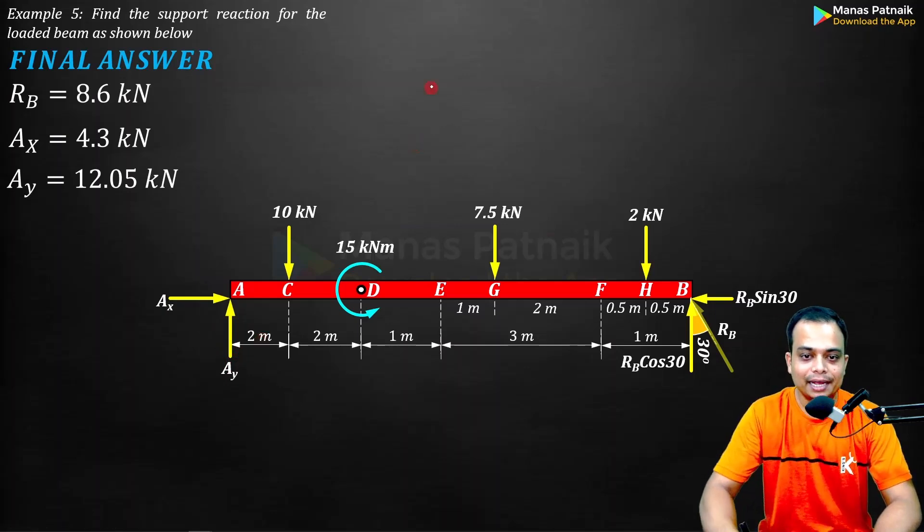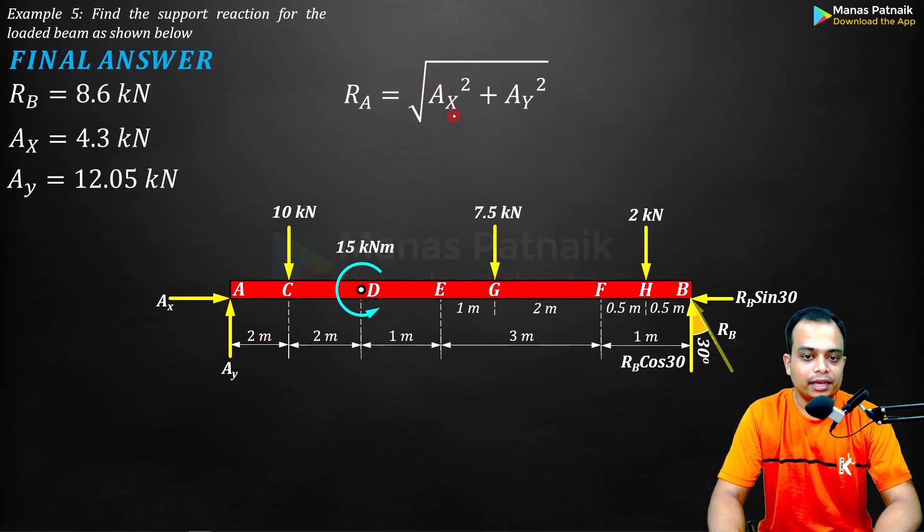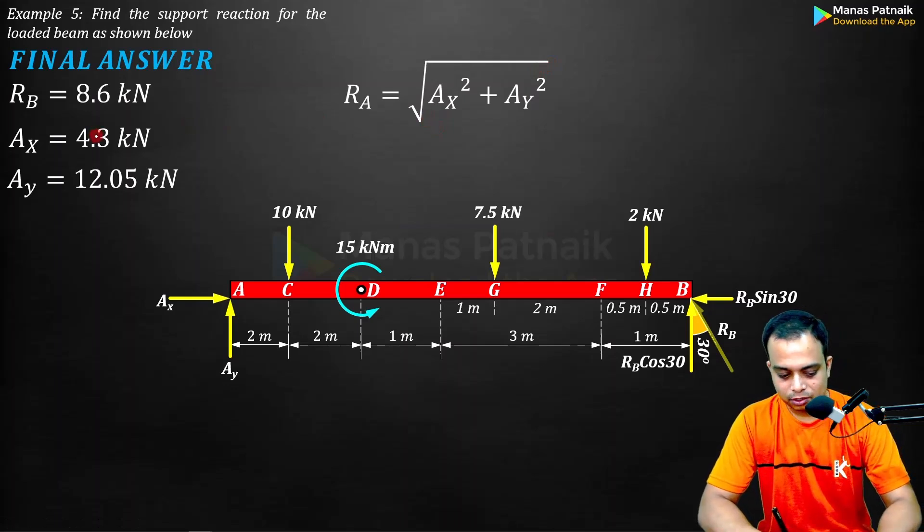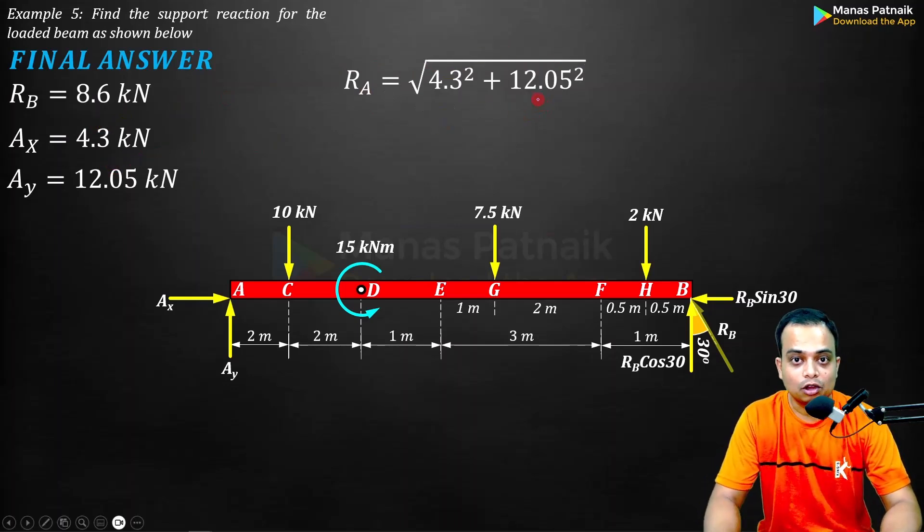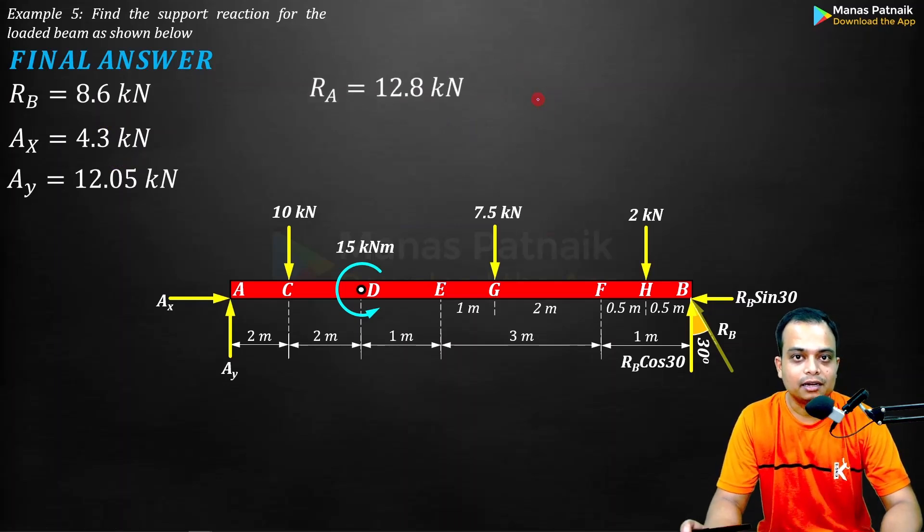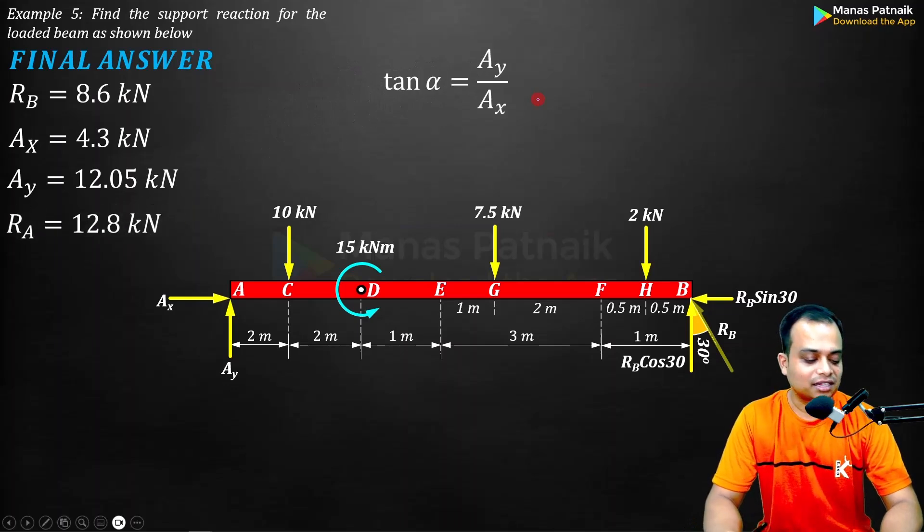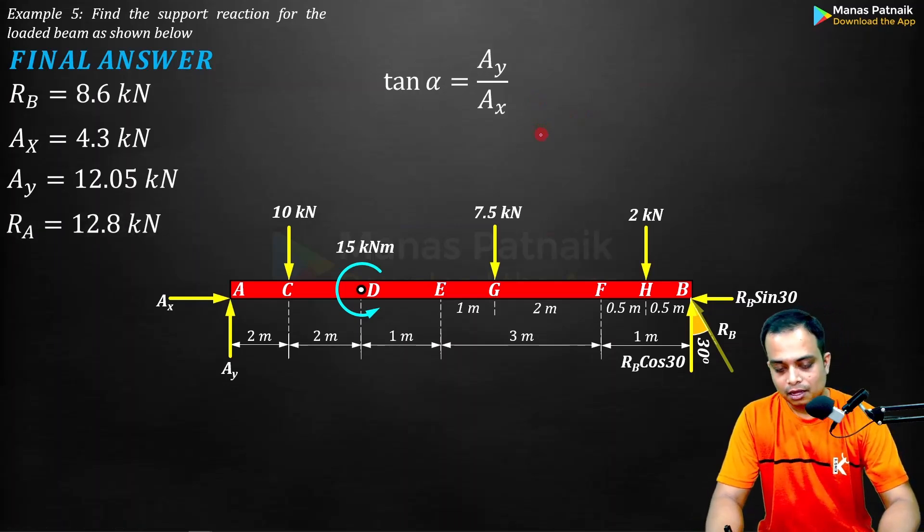These two forces will make one single resultant, so we are going to calculate that. RA is equal to square root of Ax squared plus Ay squared. Ax is 4.3, Ay is 12.05. When you do that, this is what you get. Use a calculator: 12.8 is the reaction at A. These are the final values.